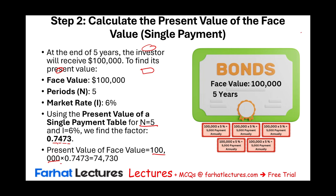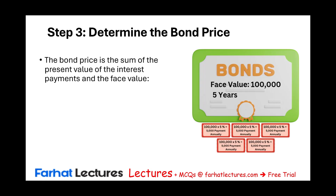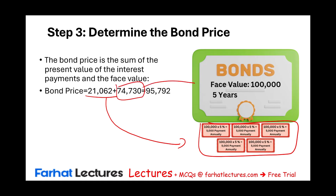The investor will pay only $74,730 for the face value component of the bond, and they will receive $100,000 at maturity. Now we combine the two pieces: $21,062 for the coupon payments plus $74,730 for the face value gives a total bond price of $95,792. This confirms what we said earlier — the bond sells at a discount because the company pays 5% when the market rate is 6%.